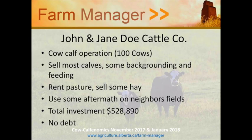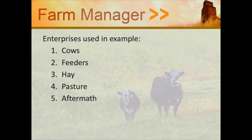In this example, we have John and Jane Doe Cattle Company — 100 cows, which is about the average in Alberta. They sell cows, do some backgrounding, do some feeding, and rent pasture. This is a simplified example used for simplicity's sake. Now the question comes: we've identified the different enterprises. How are we going to allocate the different expenses? On the second page you see some tables, and in this example you can basically prorate the different expenses as you have identified them.